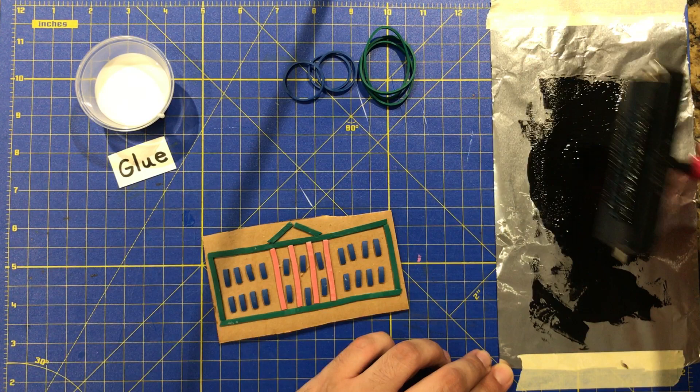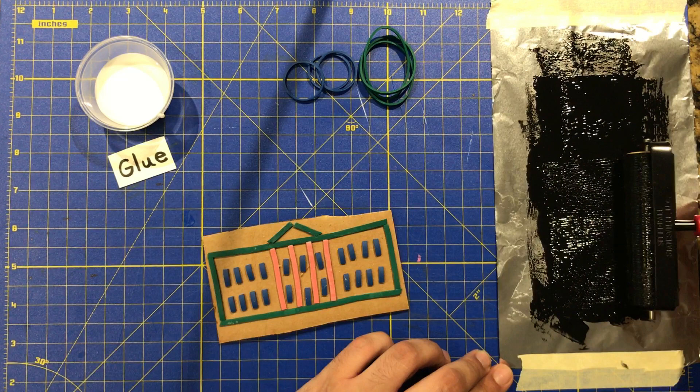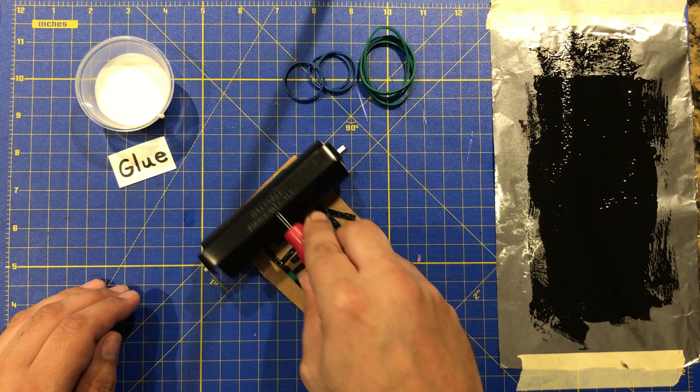This is the traditional type of ink that you would use for printmaking and the roller that you would normally use to get a nice even coat. I'm using some aluminum foil instead of an inking pad. It works just fine.